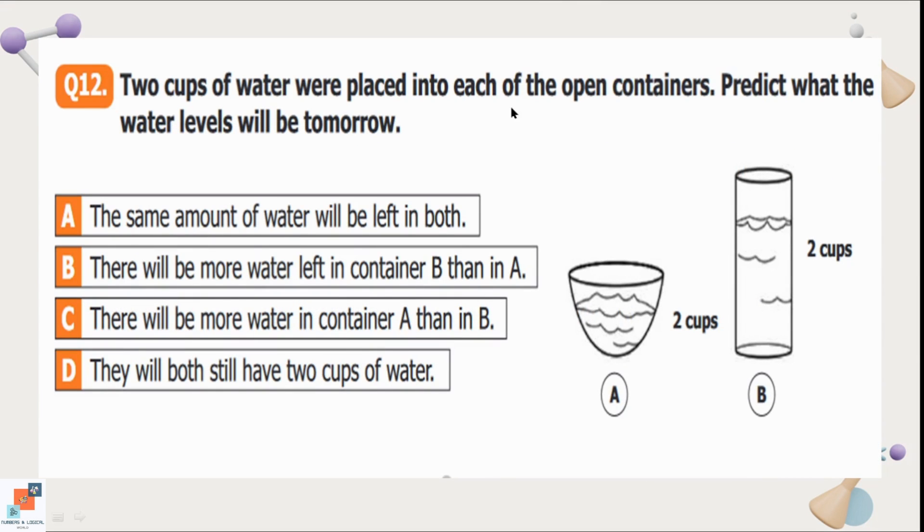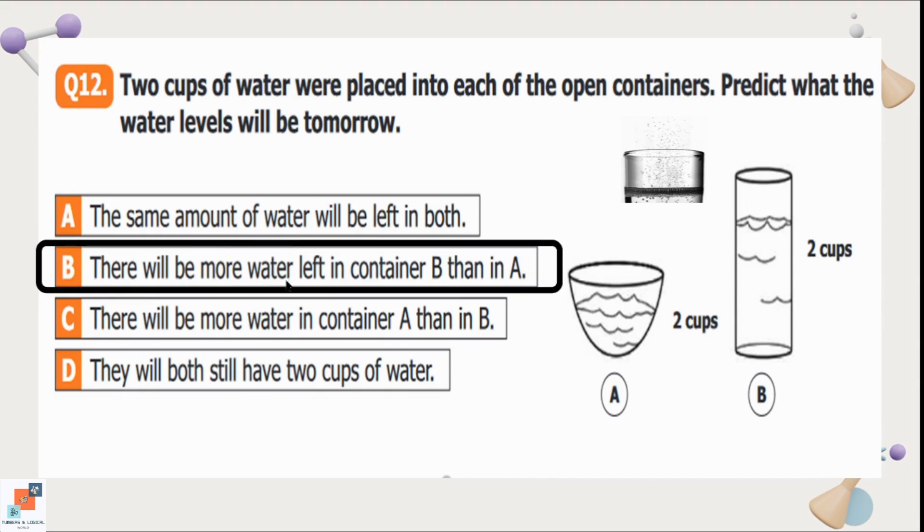Question number 12: Two cups of water were placed into each of the open containers. Predict what the water levels will be tomorrow. Option A is the same amount of water will be left in both. Option B is there will be more water left in container B than in A. Option C is there will be more water in container A than in B. Option D is they will both still have two cups of water. Water will evaporate on the next day. Water will evaporate from container A faster than container B because container A has more surface area. It is wider than container B. So it has more space for water to evaporate. So after one day container A will have less water and container B will have more water. Option B is the correct option.